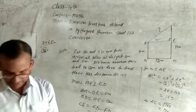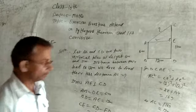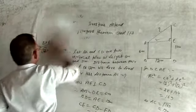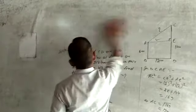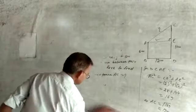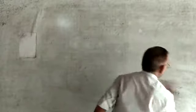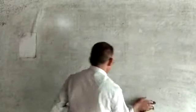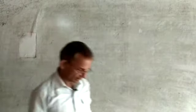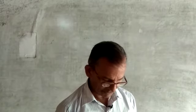Now I am going to solve question number 13. Question number 13 is that D and E are points on the sides CA and CB respectively of a triangle ABC, right-angled at C. Prove that...